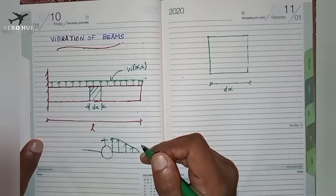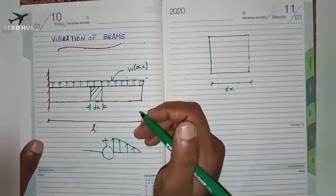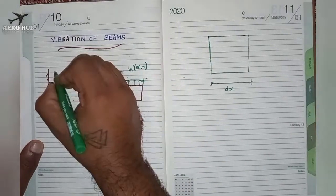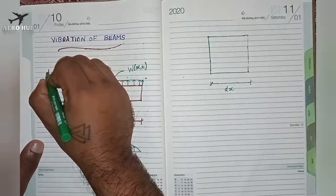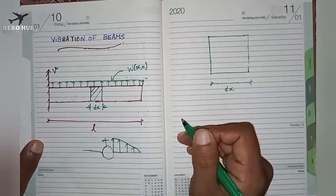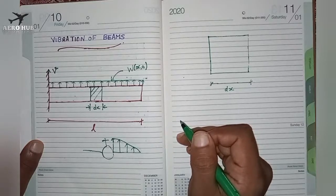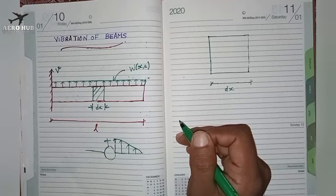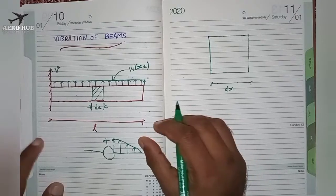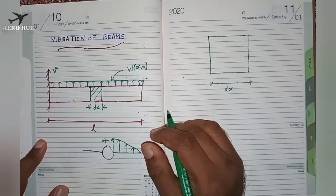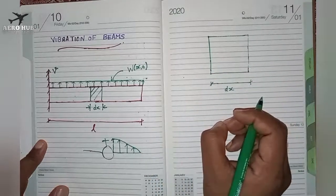Now I will draw the free body diagram of this particular element. Since we are applying a load in the vertical direction, the beam will have a displacement v, which is the displacement along the positive y direction. When the beam is subjected to this loading, it will bend, so we have a distribution of shear force as well as bending moment on this slice of the beam.